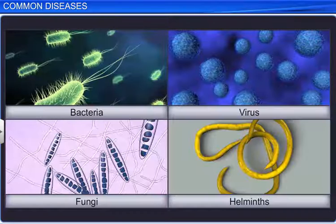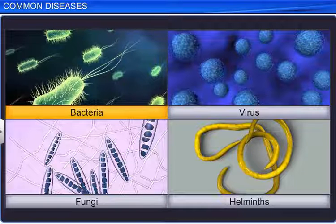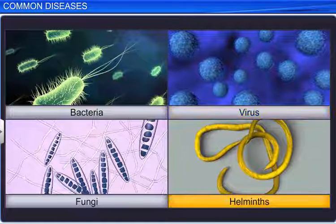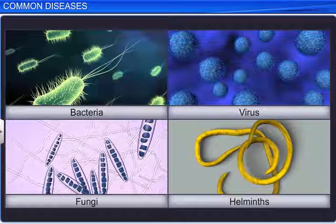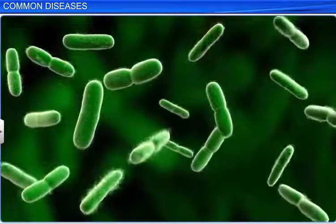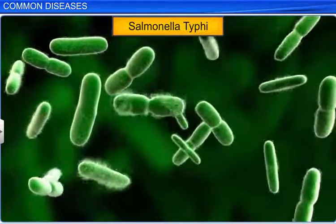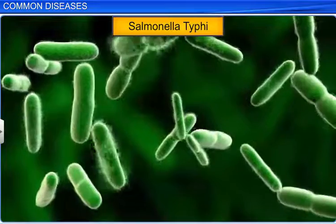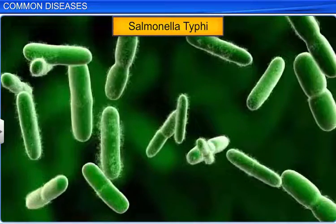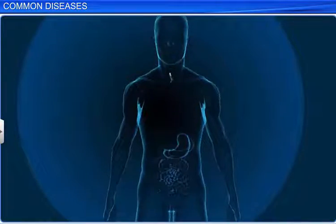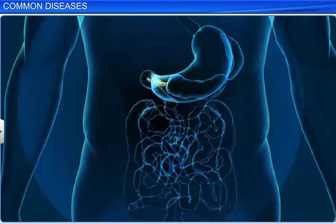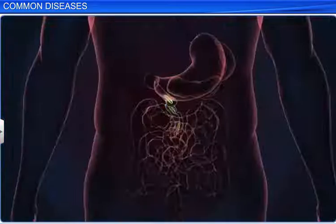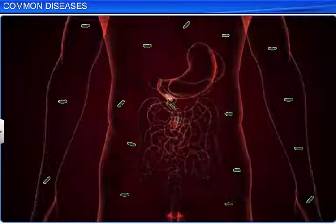Some common pathogens are bacteria, viruses, helminths, and fungi. The bacteria Salmonella typhi causes typhoid fever in humans. Usually, these bacteria enter the small intestine via contaminated food or water, and migrate to other organs via the blood.